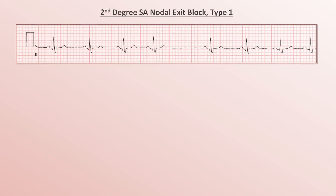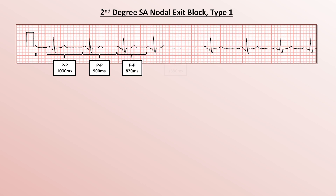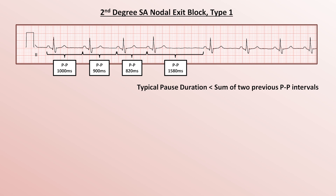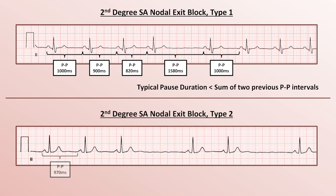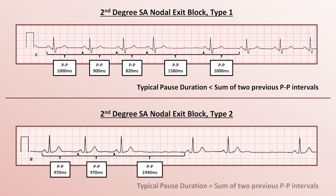Here are examples of types 1 and 2 second degree SA block. In type 1 block, the p-p interval gradually decreases until there appears to be a missing p-wave with an associated pause. The pause duration is less than the sum of the two previous p-p intervals, and the p-p interval after the pause is typically longer than the one before. In type 2 block, the p-p interval is constant until a missing p-wave associated with a pause that is exactly twice the duration of the prior p-p intervals, and the p-p interval after the pause should be the same as the one before.